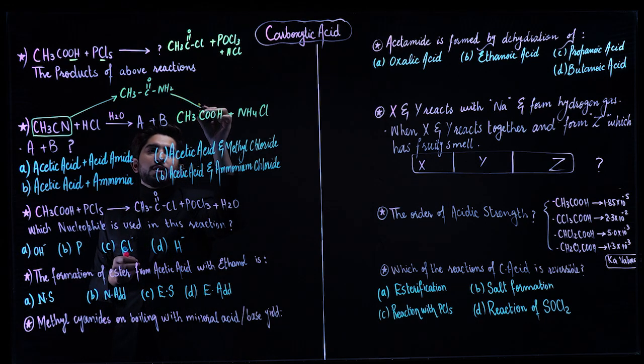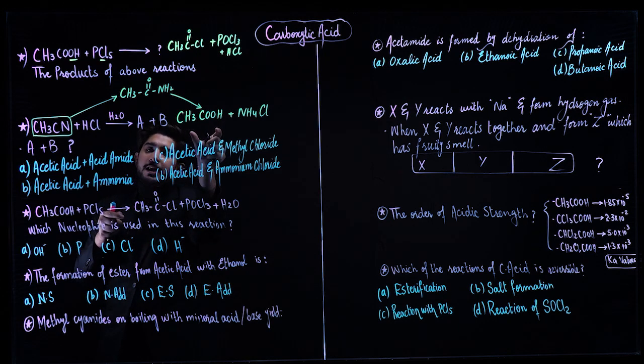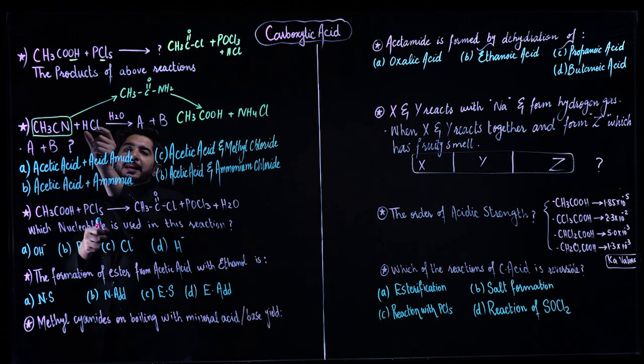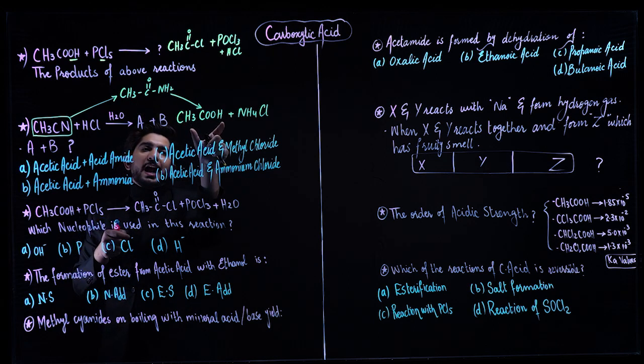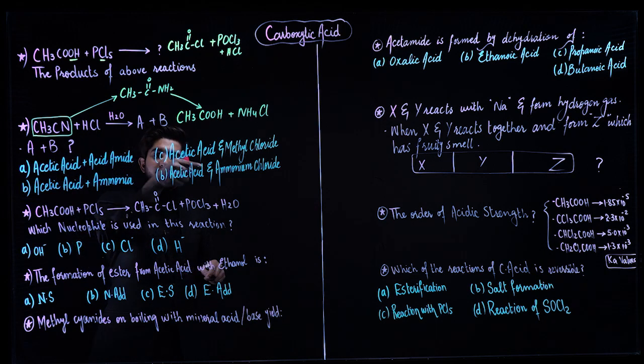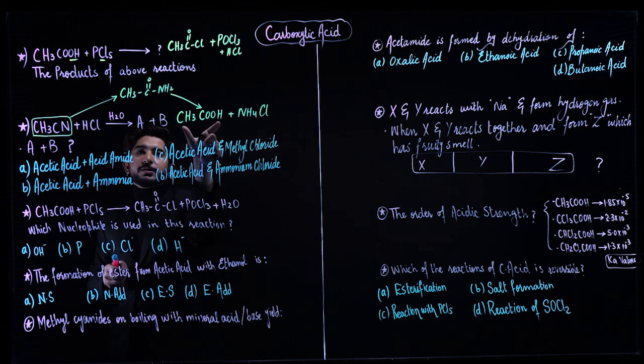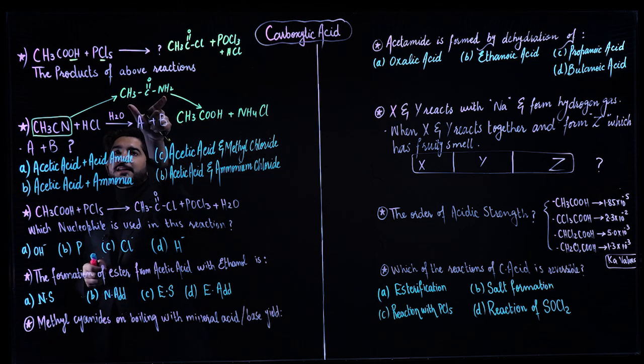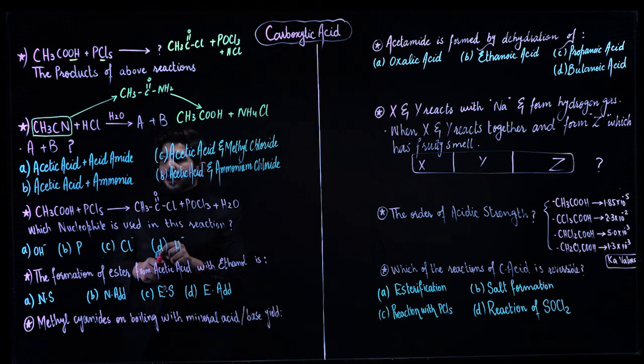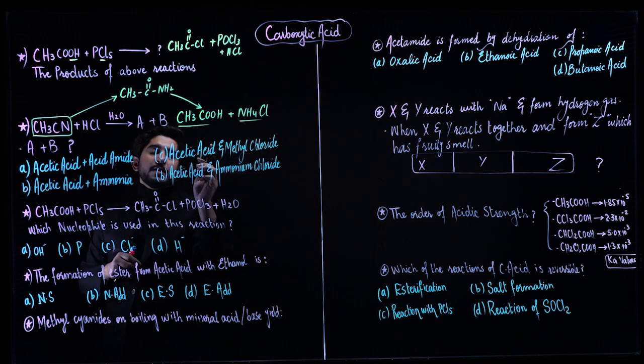This is the final product, but first it forms amides. This methyl cyanide will give you acetamide, that will give you acetic acid. You have to remember this complete mechanism - this is hydrolysis. In the reverse process, you have dehydration. If you do dehydration of carboxylic acid, you'll get amides. Amides dehydration gives you nitriles again.